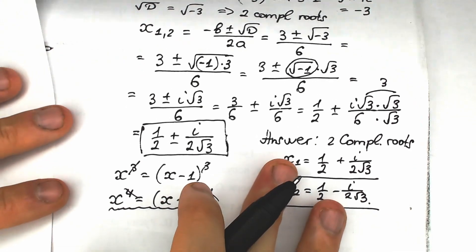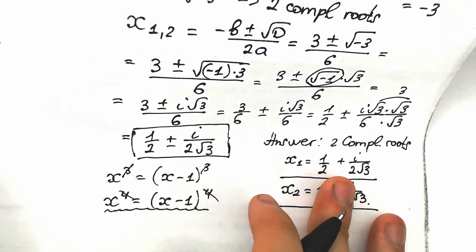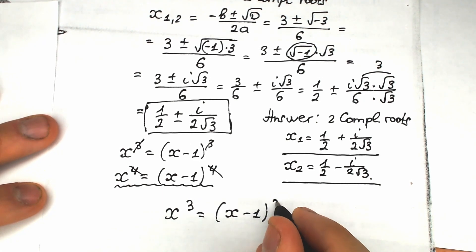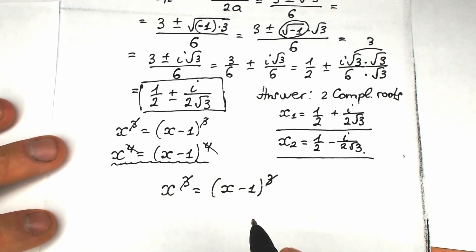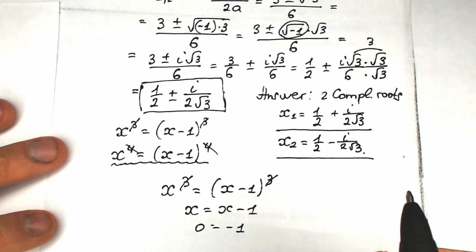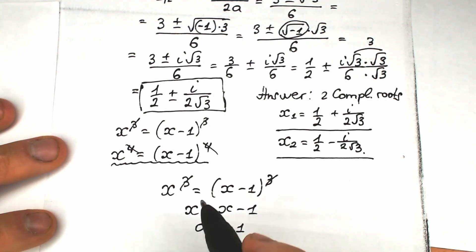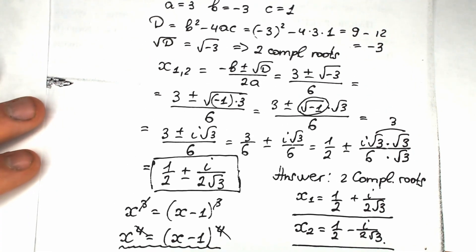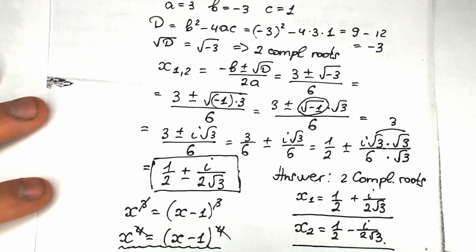Imagine you're sitting on your exam and you have x cubed equals x minus one cubed. You see the exponent three, cancel both sides, get x equals x minus one, then zero equals minus one, and move on to the next question — that is a very bad thing in terms of math. Forget about this fast method by inspection. Use methods based on correct properties and rules, which is what really matters in mathematics.